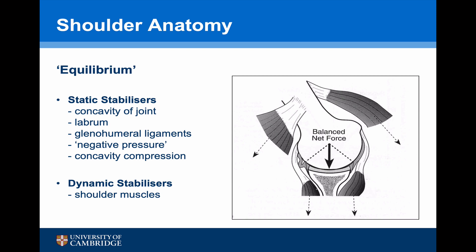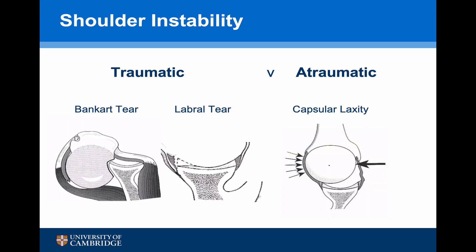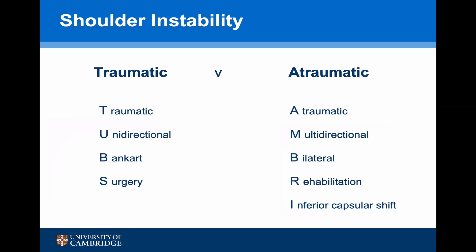Until relatively recently these were thought to be the only components of joint stability. Using this model, instability of the glenohumeral joint was described as either traumatic — involving tearing of the glenohumeral ligaments such as a Bankart tear or the labrum — or atraumatic, where none of the ligaments were damaged but instability was due to capsular laxity. A previous acronym for this model was TUBS: Traumatic, Unidirectional, Bankart, Always requires Surgery; and AMBRI: Atraumatic, Multidirectional, Bilateral, Rehabilitation or an Inferior capsular shift.